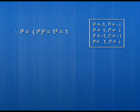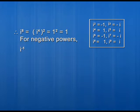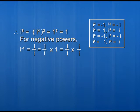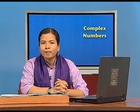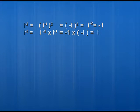Now let us find values for negative powers of i. For i to the power minus 1, we write 1 upon i, then multiply numerator and denominator by i, giving i upon i squared. Substituting i squared equals minus 1, we get i upon minus 1, which equals minus i. For i to the power minus 2, we write it as the square of i to the power minus 1, giving minus 1. We can similarly find i to the power minus 3 equals i, and i to the power minus 4 equals 1.